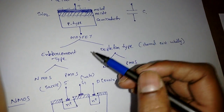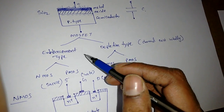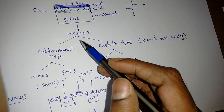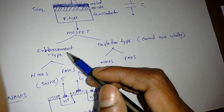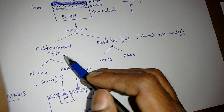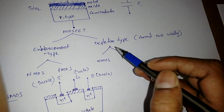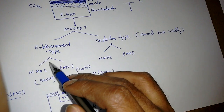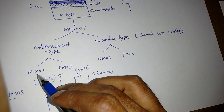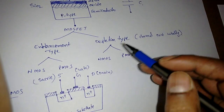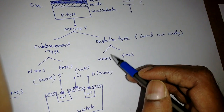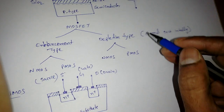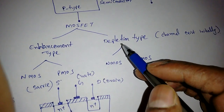When we think about MOSFETs, there are two types: enhancement type and depletion type. Enhancement type further divides into N-channel MOSFET and P-channel MOSFET. Depletion type also has two variants: N-MOS and P-MOS. The key question is: what is the difference between these two types?